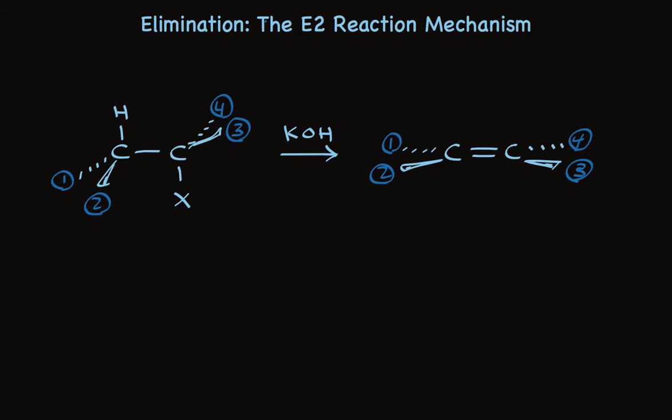Bases react with acids, and we can follow the reaction using arrow pushing. A pair of electrons from the base is used to form a bond with this proton, as this pair of electrons in this sigma bond is used to form a pi bond, which can happen only if this pair of electrons leaves with the halide.